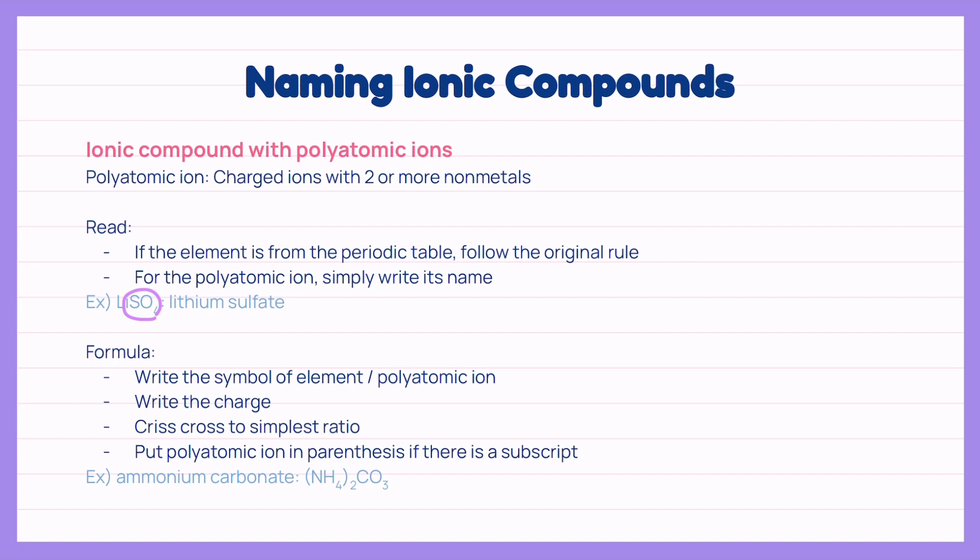Like the example of ammonium carbonate, we write the polyatomic ion ammonium with one plus charge and carbonate with two minus charge. When we crisscross, we need to write down the charge for ammonium but not the carbonate as the charge of carbonate is one. So we write down ammonium in brackets followed by a subscript of two and the normal form of carbonate.